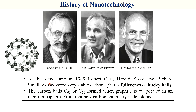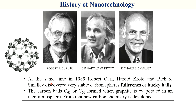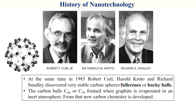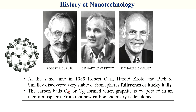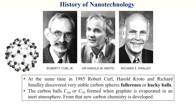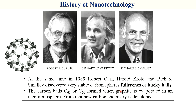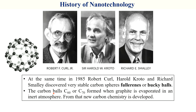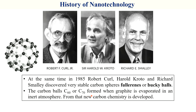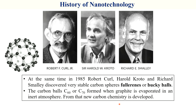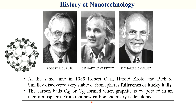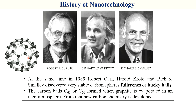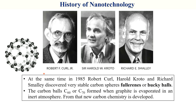At the same time, in 1985, Robert Curl, Harold Kroto, and Richard Smalley discovered very stable carbon spheres — an allotrope of carbon known as fullerenes or buckyballs (C60). These carbon balls of C60 or C70 form when graphite is evaporated in an inert atmosphere, giving rise to a new carbon chemistry. This is fullerene C60, invented by these three scientists.